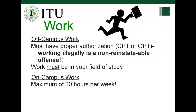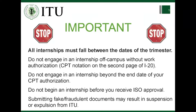For off-campus work, you must have proper authorization — either CPT or OPT. OPT is after graduation; CPT is internship while attending school. Working illegally is a non-reinstatable offense. Work must be in your field of study. For on-campus jobs, there is a maximum of 20 hours per week. All internships fall within the dates of the term. Do not engage in internship off-campus without proper CPT authorization as shown on your I-20. Do not begin an internship without first receiving that authorization.